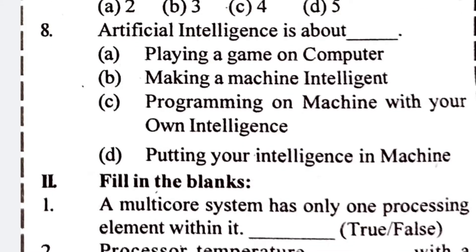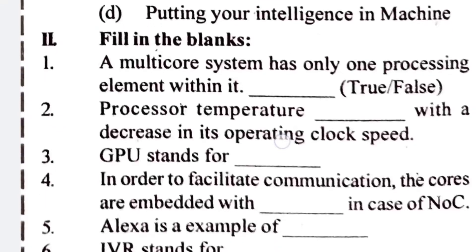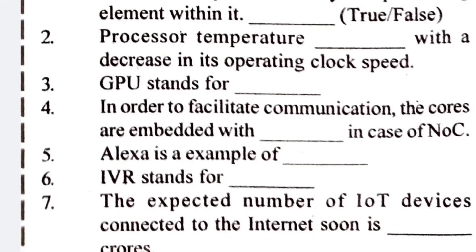Question eight: artificial intelligence is about — the correct option is D, 'putting intelligence in a machine.' Now fill in the blanks. Number one: a multi-core system has only one processing element within it — this is false.